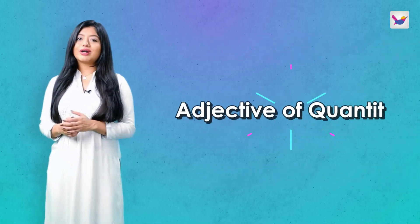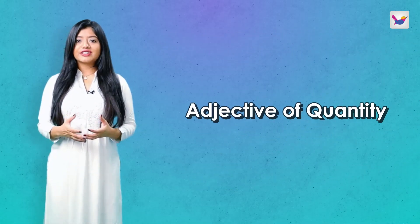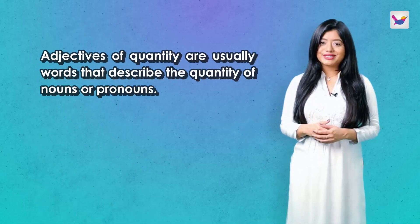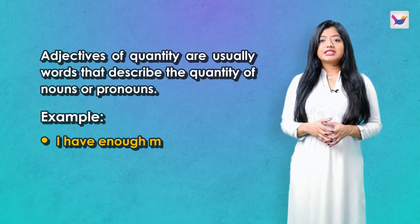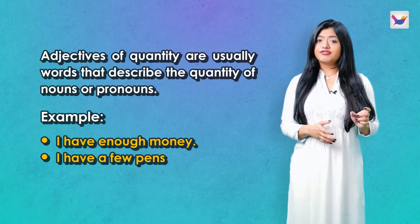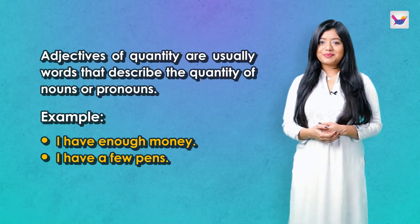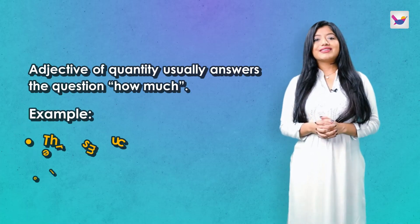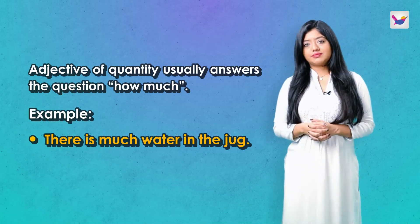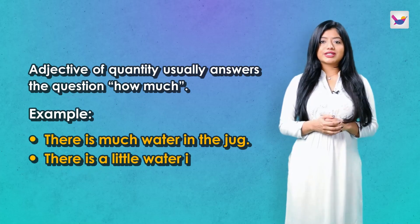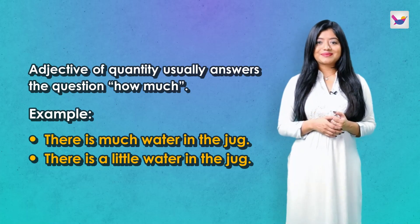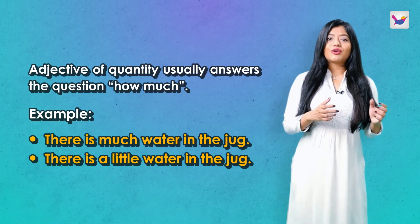Now let's look at Adjective of Quantity. The adjective that shows the amount of a noun or pronoun, we call it Adjective of Quantity. For example: much, little, a few, sufficient, enough. Adjective of Quantity usually answers the question 'how much.' There is much water in the jug. There is a little water in the jug. The answer would be much or a little.